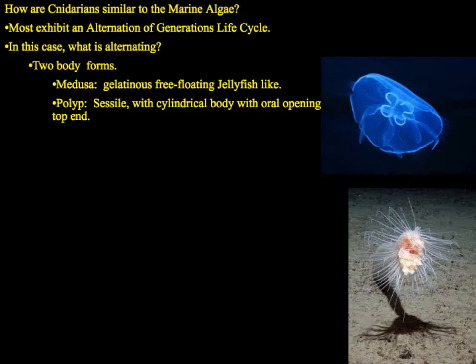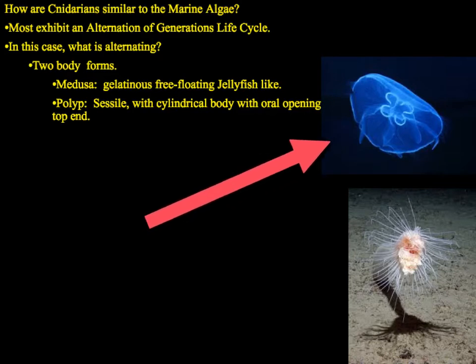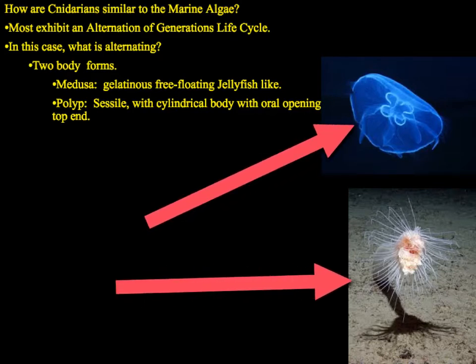So this group has two basic forms: the medusa, which is the free-floating form, and the polyp, which is the attached form. What's also interesting is that many of them alternate between the medusa form and the polyp form in an alternation of generations life cycle, similar to that found in the algae.